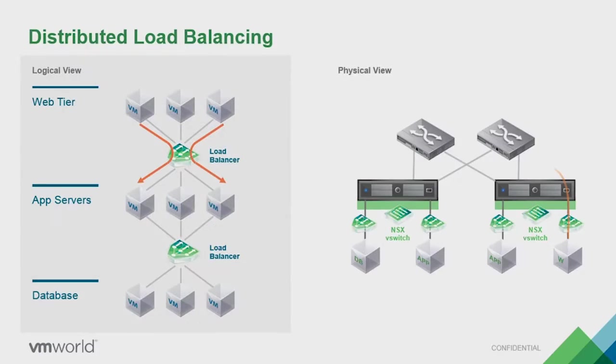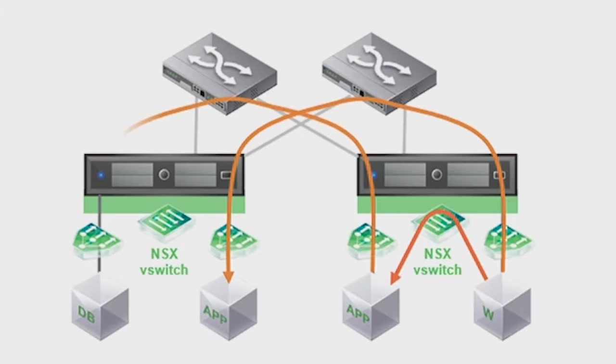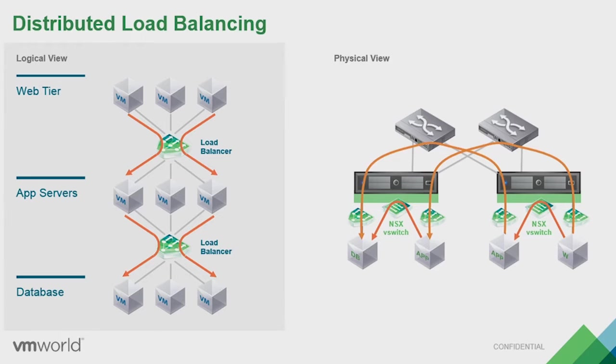He showed the one-button deployment of a bunch of virtual machines connected into a rich topology, and that's the sort of thing that we can do with network virtualization. I wanted to talk about distributed load balancing as we go from the second tier to the third tier. We can still do the same sort of thing through the NSX vSwitch, just applying a slightly different set of criteria.